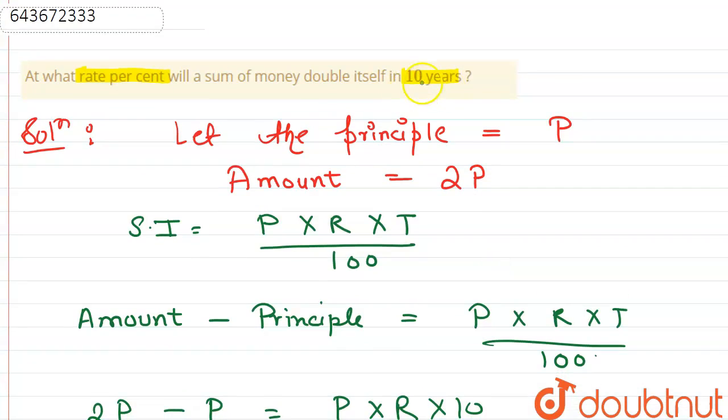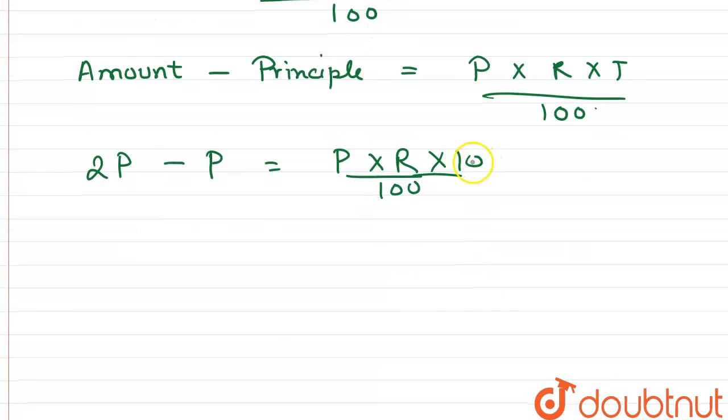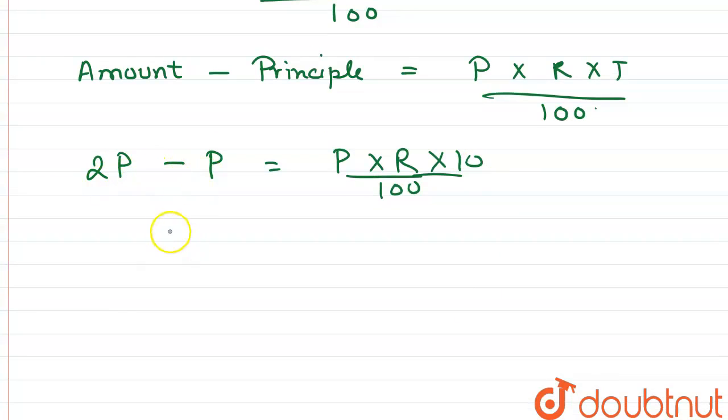So now 2P minus P is equals to P times R by... this will cancel out, this is 10. So P will also cancel out.